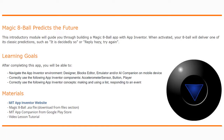Today we're going to complete a basic app using MIT App Inventor, known as the Magic 8-Ball. It is said that the Magic 8-Ball can predict the future. This introductory module will help guide you through building a Magic 8-Ball app with MIT App Inventor. When activated, your 8-Ball will deliver one of its classic predictions, and you will learn how to create your predictions and incorporate them into your app.